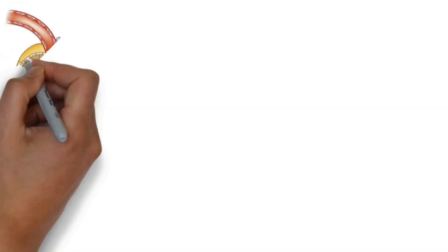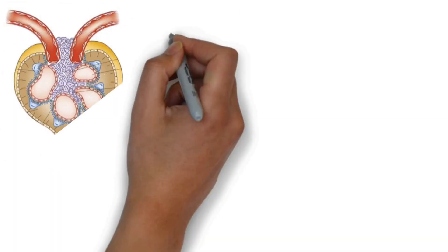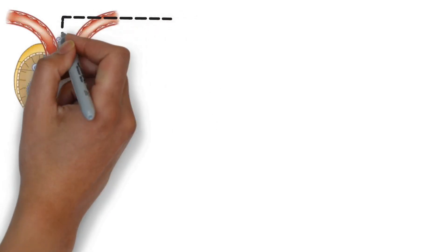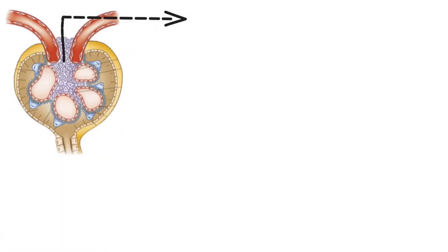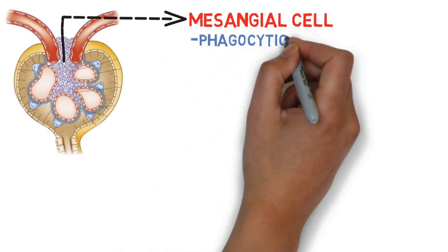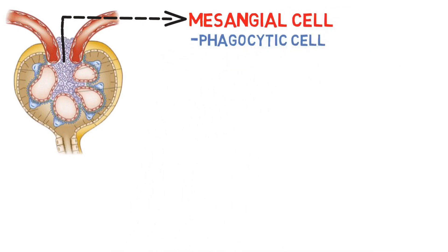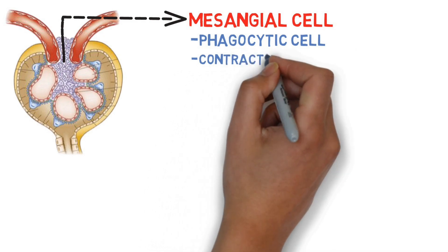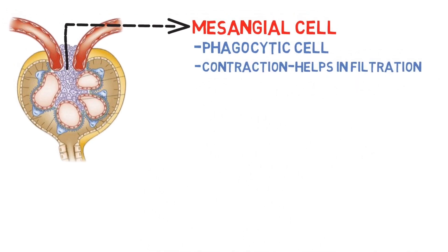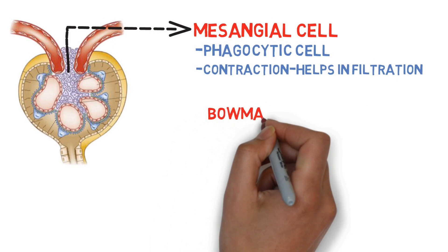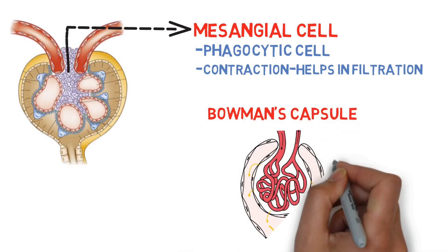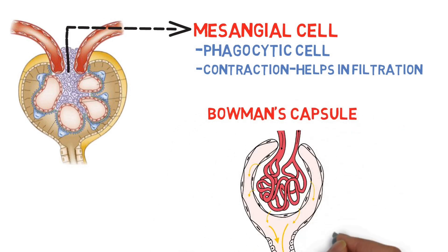Between the capillaries in the glomerulus, connective tissue cells called mesangial cells are present. They are phagocytic in nature and act as a single contraction unit, helping in filtration.